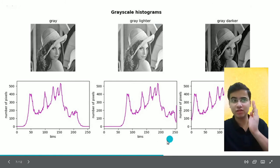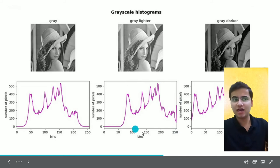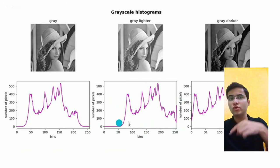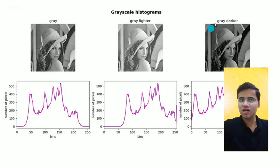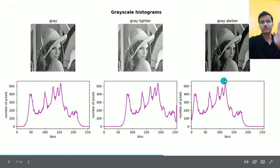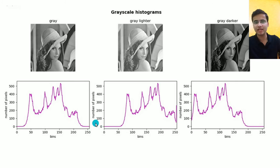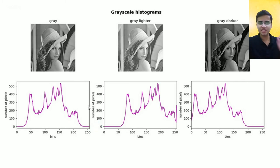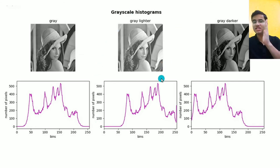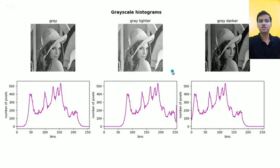If the histogram is fully expanded and covers all 256 bins, that represents a good photo. If we darken the image, the histogram shifts toward the dark values — toward the lower end of the x-axis.